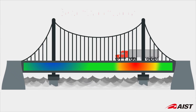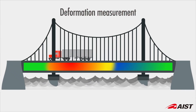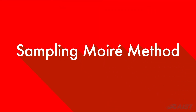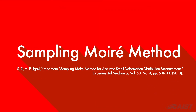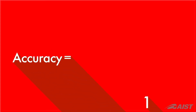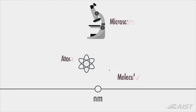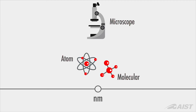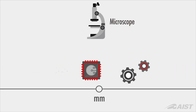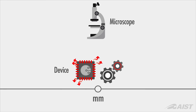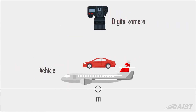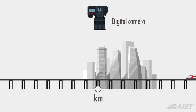This allows us to measure deformation of various structures. This method is called the sampling moiré method, which can measure displacement up to one one-thousandth of a grating pitch. The method is applicable at an atomic level as well as to electronic devices, mechanical components, vehicles, and large structures, among a wide range of applications.